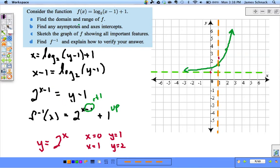So my vertical asymptote for the log would be X equals 1. This point right here that was on the graph, 1, 2 becomes 2, 1.